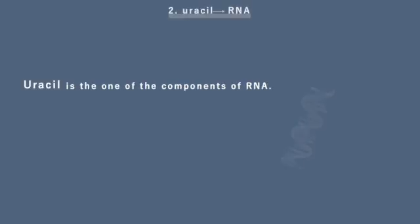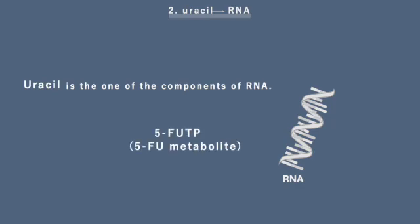uracil is one of the components of RNA. The metabolite of 5-FU is integrated into RNA, causing a disturbance in RNA function.